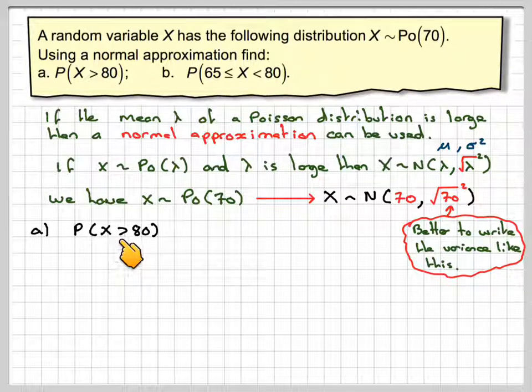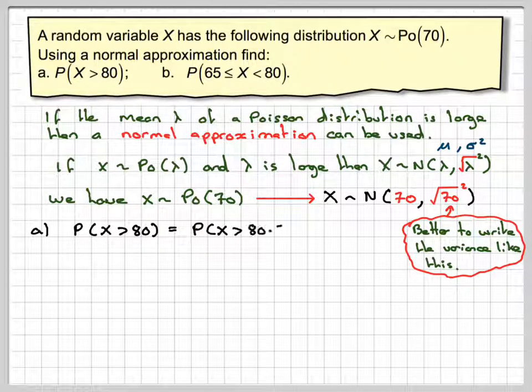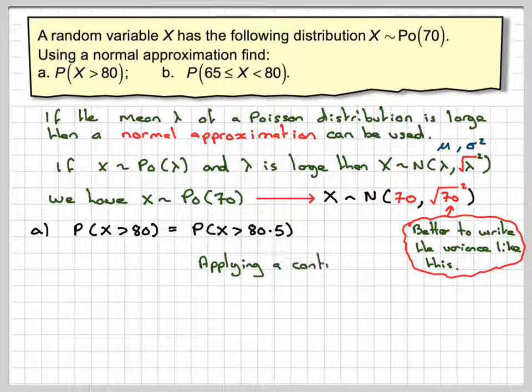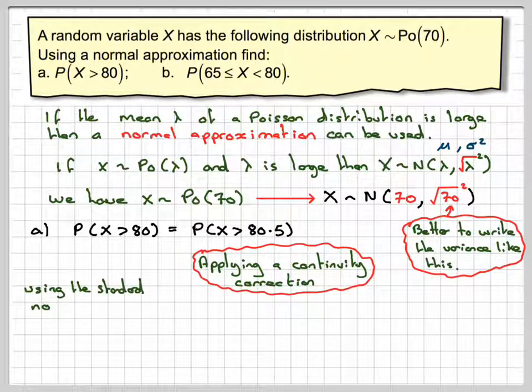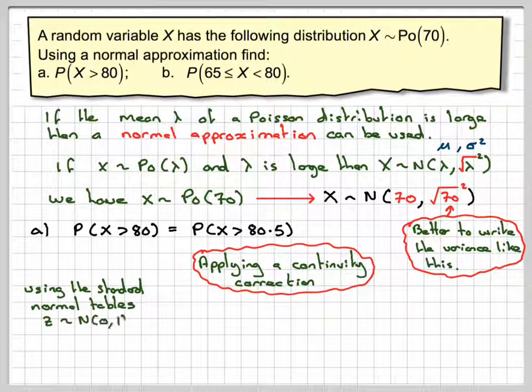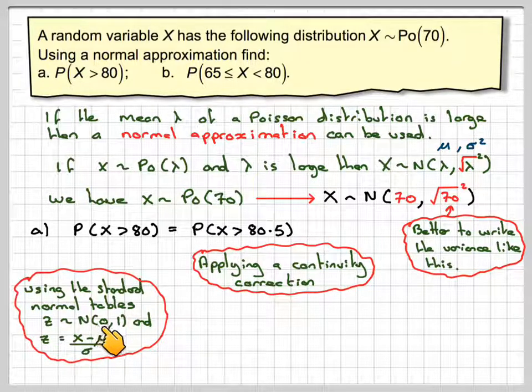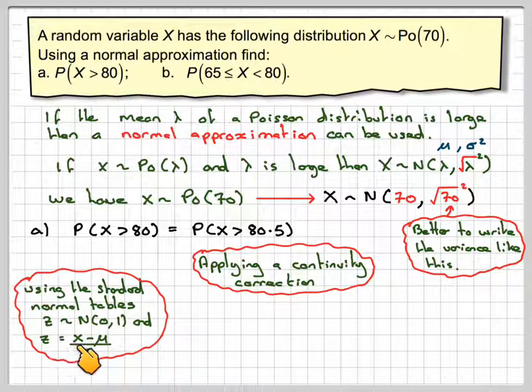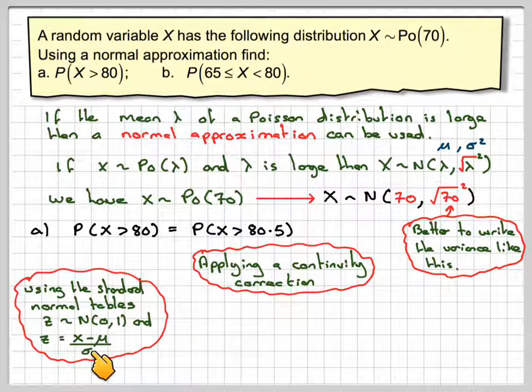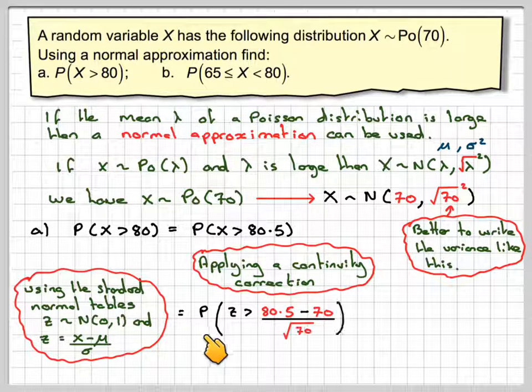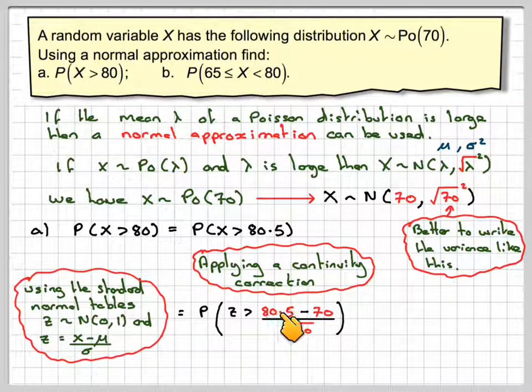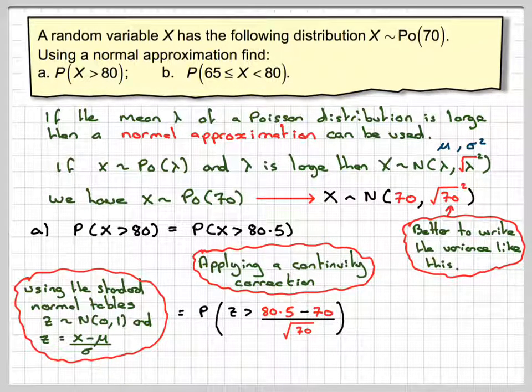We've got the probability that X is greater than 80. We have to do a continuity correction, so the probability that X is greater than 80.5, applying a continuity correction. Using the standard normal tables, Z is normally distributed with mean 0 and variance 1, and then using the standardization of X minus mean divided by the standard deviation.